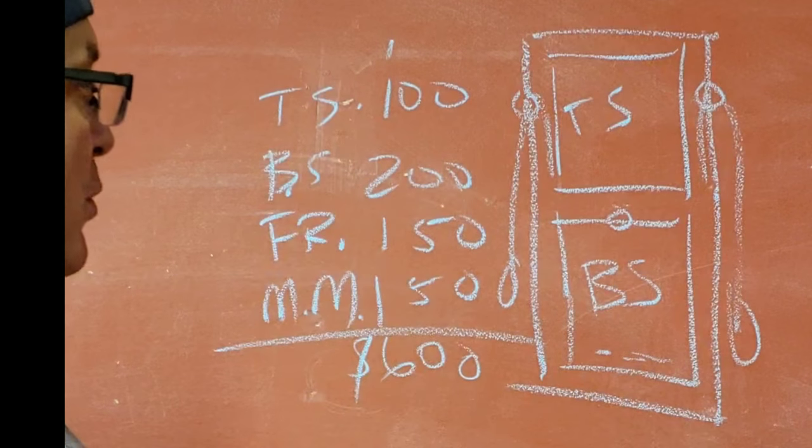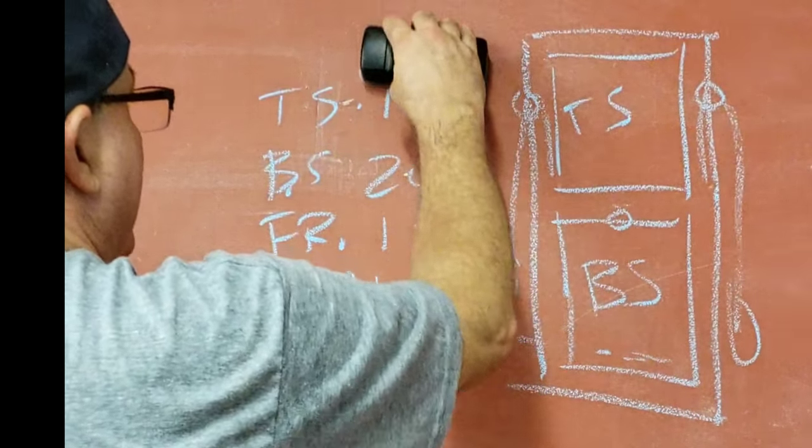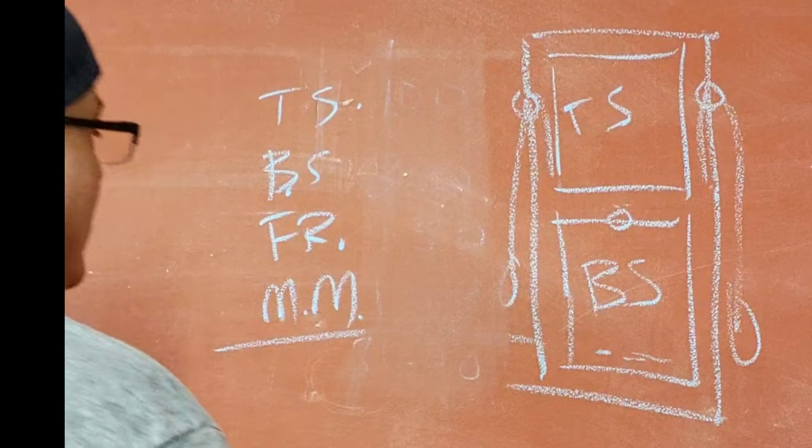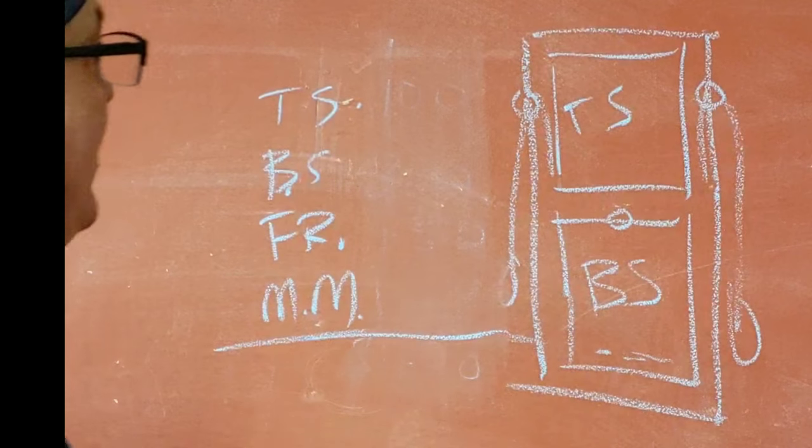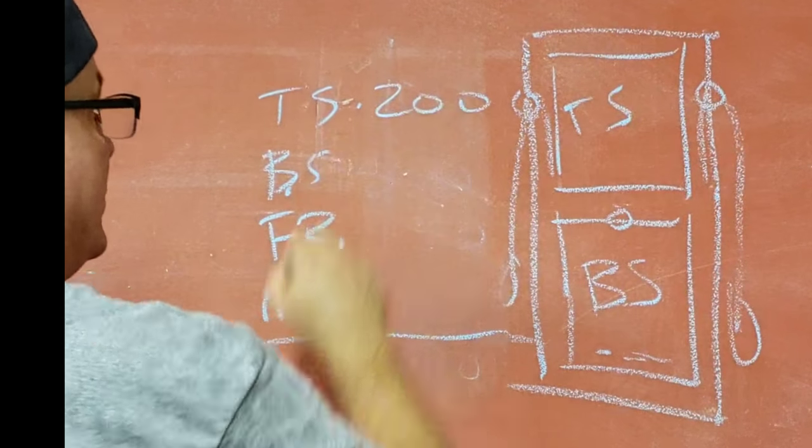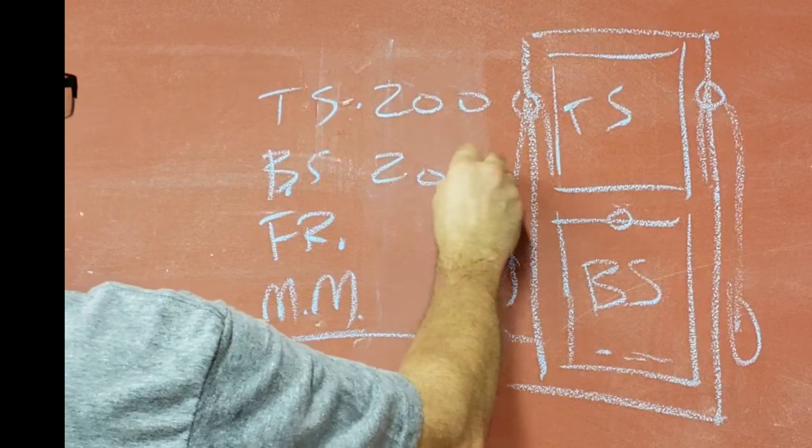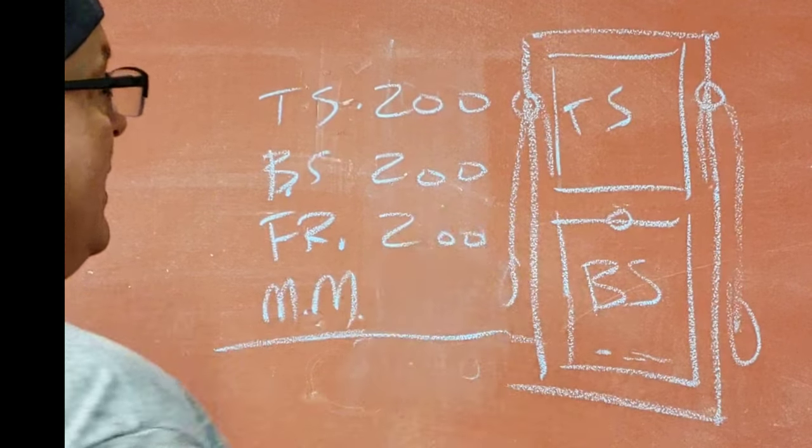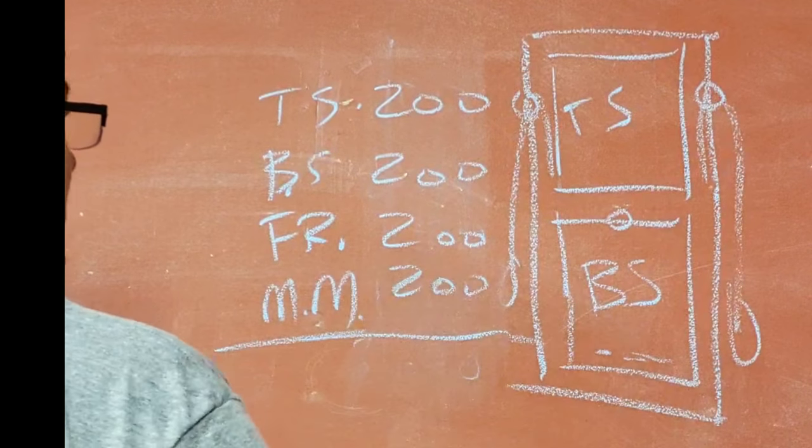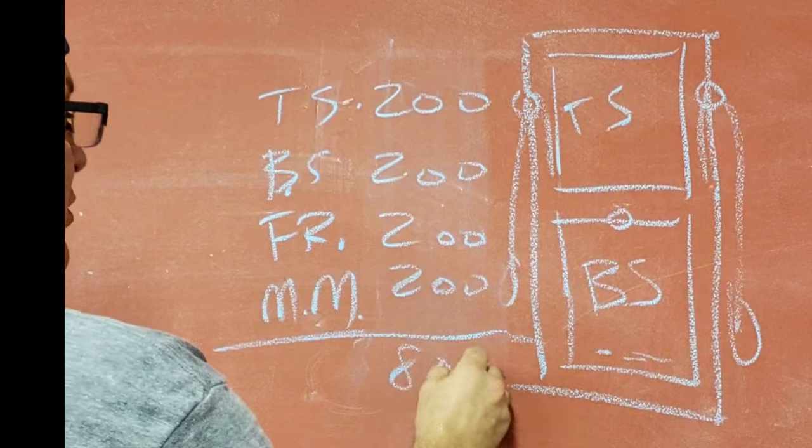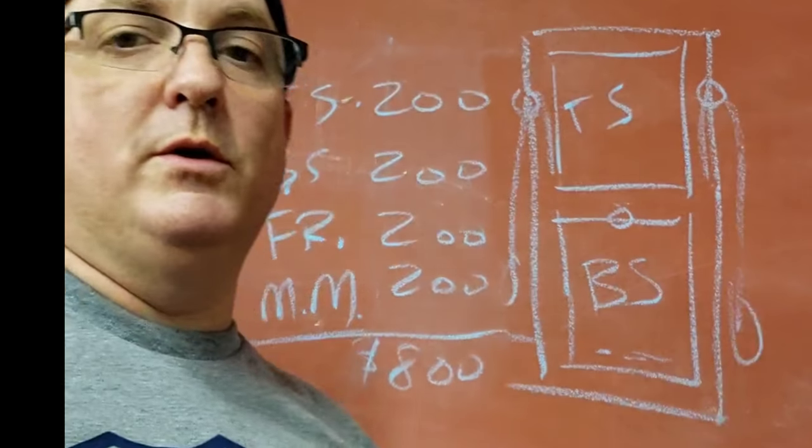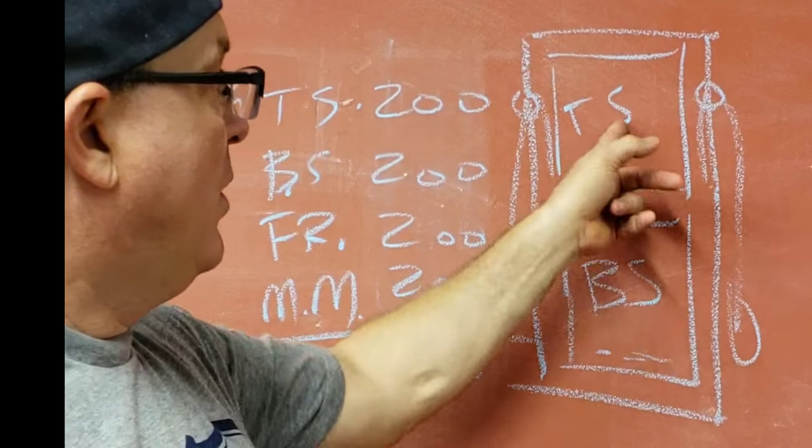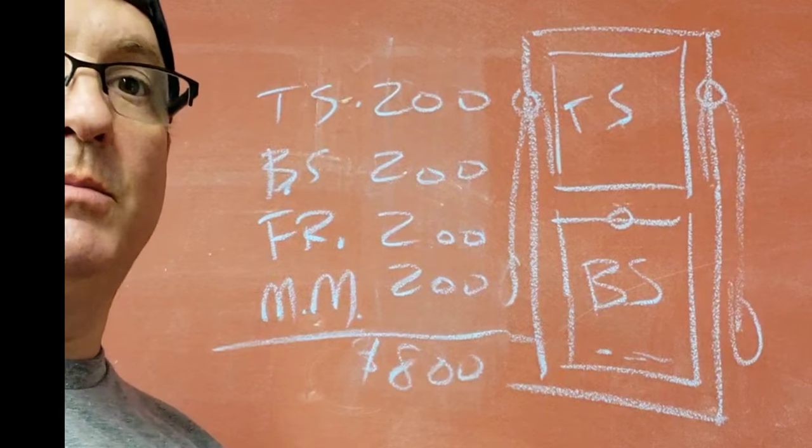Now me, I'm a little bit more realistic, and I'm going to make every single one of these the same price. So let's say I'm going to start with the top sash, $200. The bottom sash, $200. The frame, $200. And the mechanics, $200. That equals $800 to restore that window. That's a typical double-hung window that's got a one-light sash at the top and a one-light sash at the bottom.